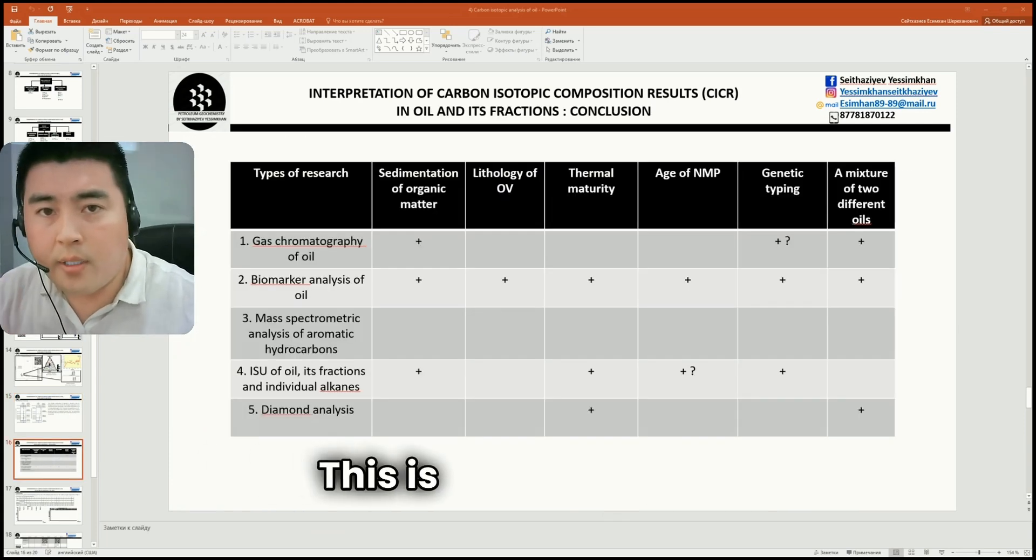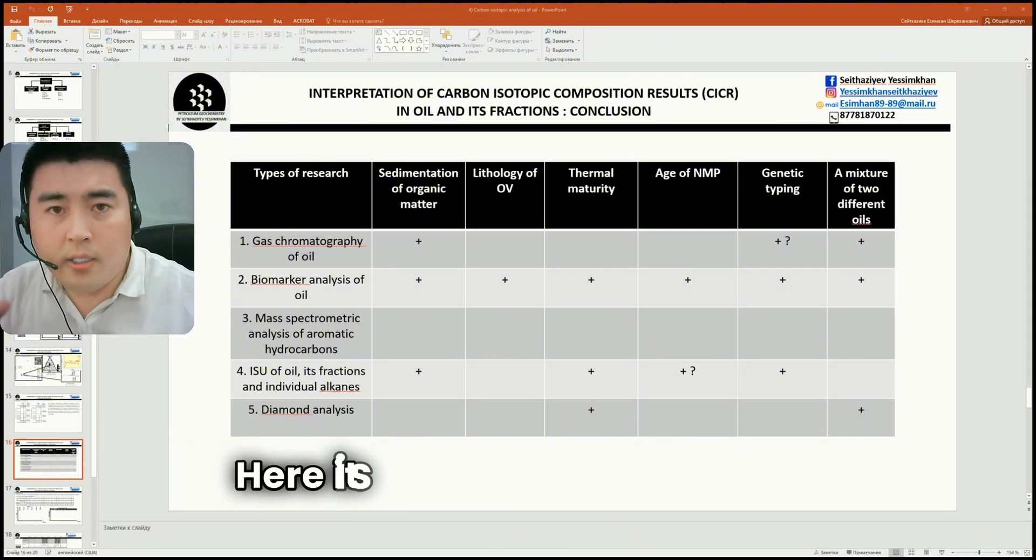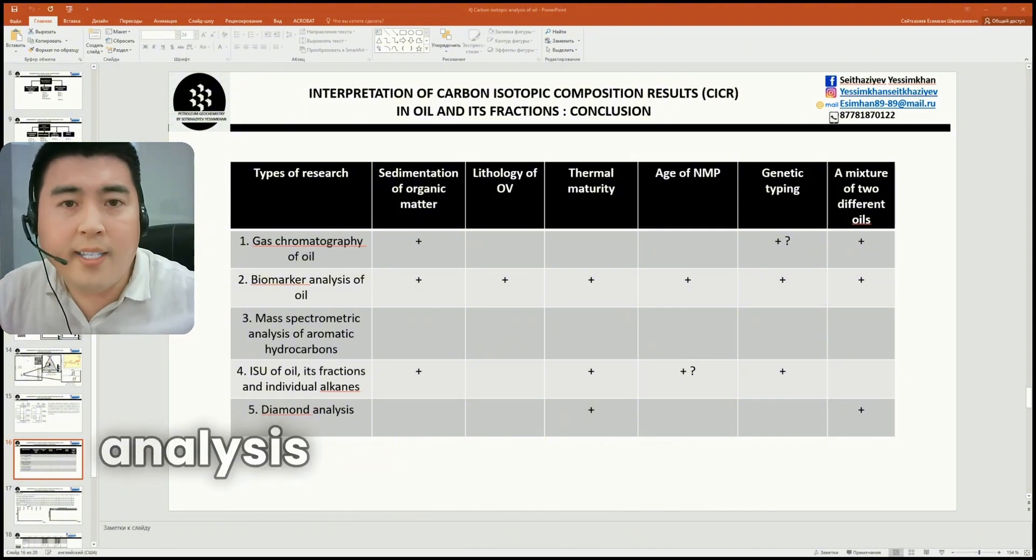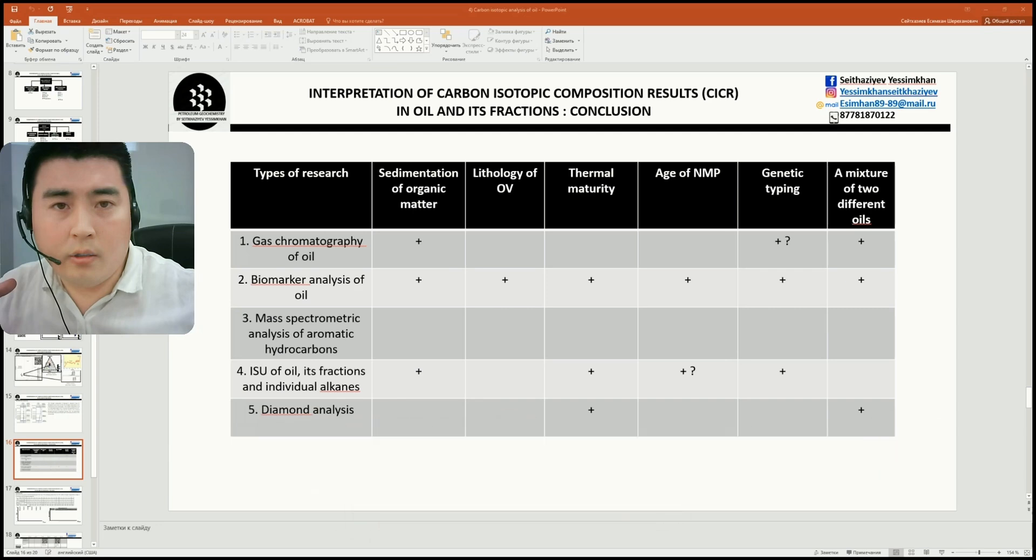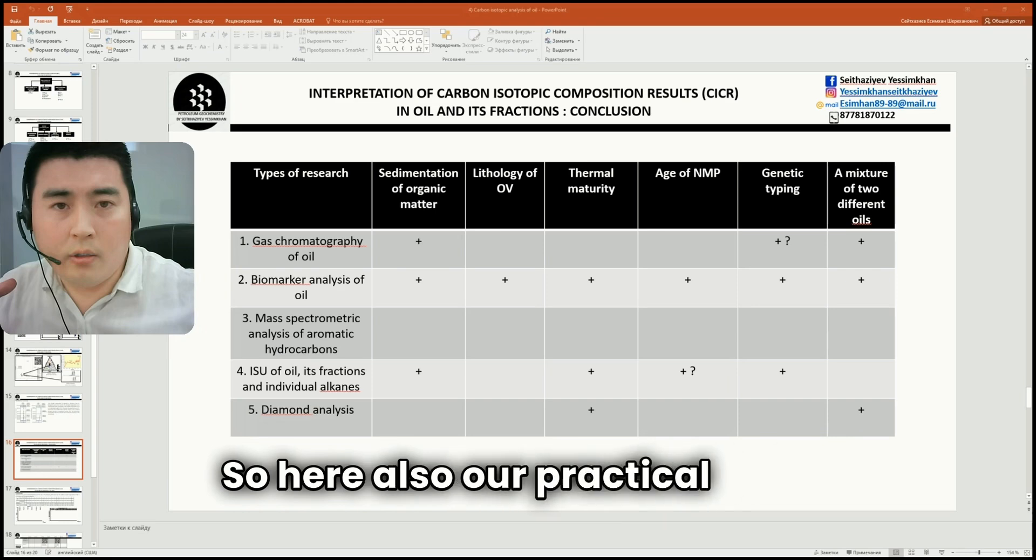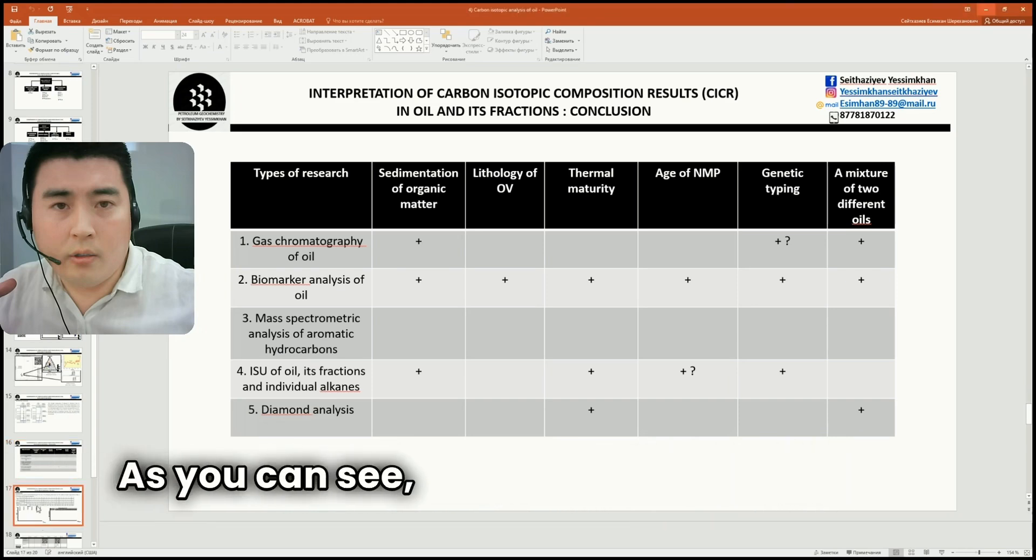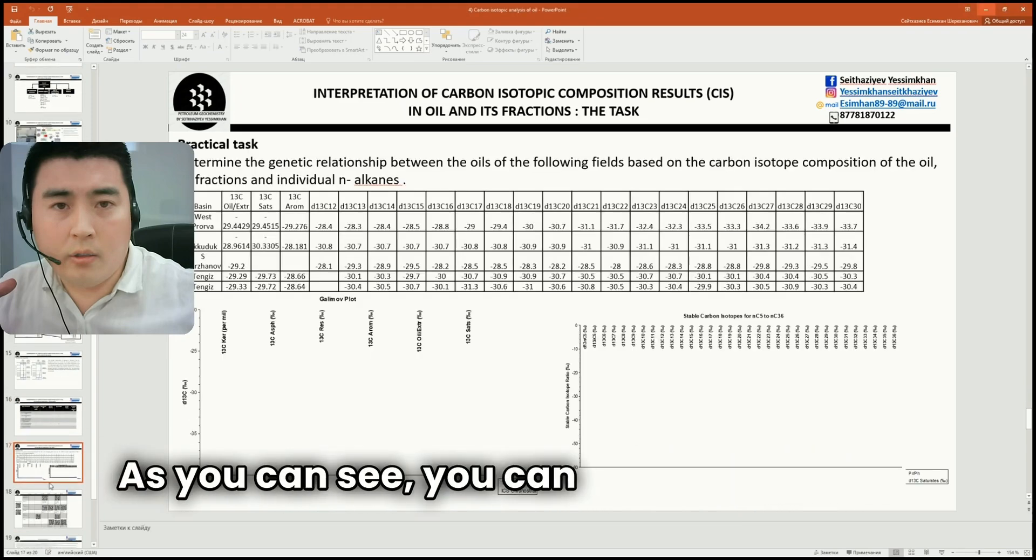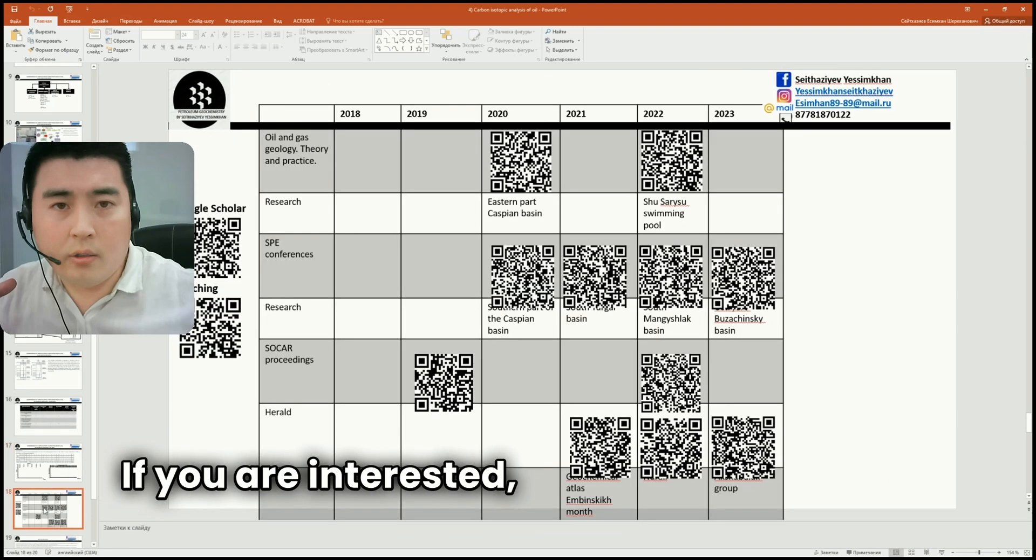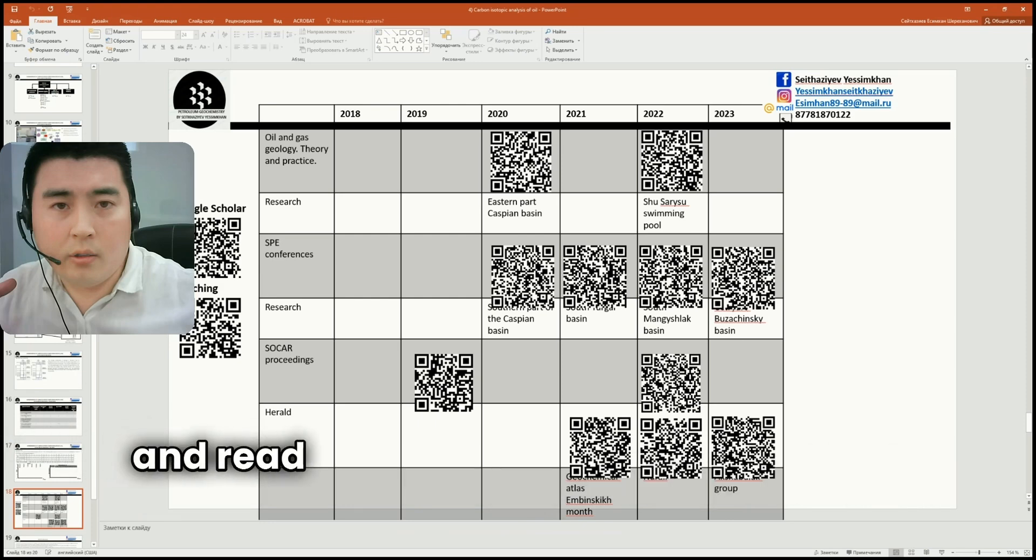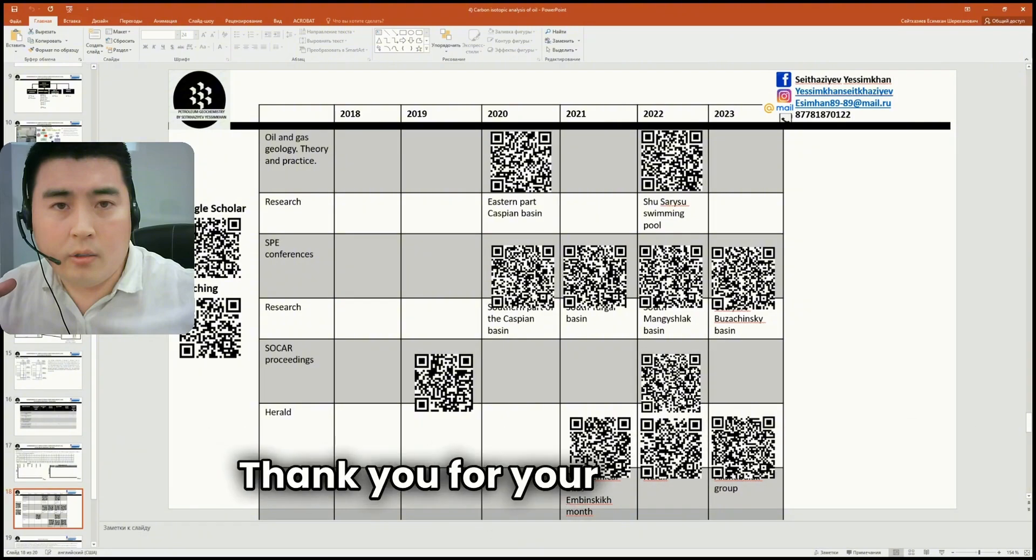This is our final slide. Here it is presented what analysis determines such genetic parameters. So here also is our practical task. As you can see, you can construct graphs of the isotopic composition of oil and its fractions. If you are interested, you can scan the QR code and read my publications related to this topic. Thank you for your attention.